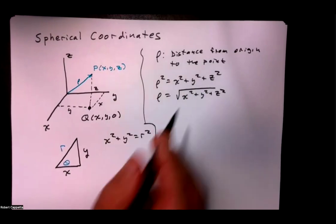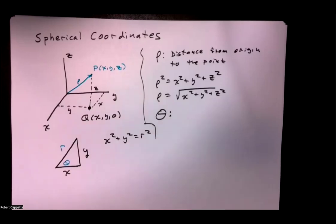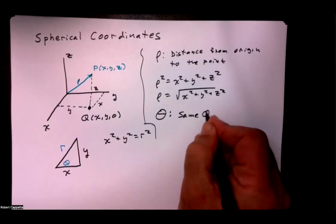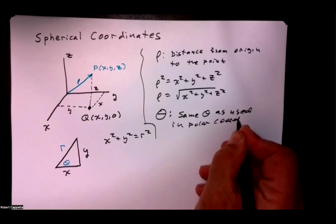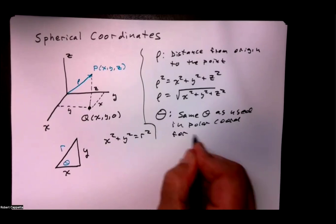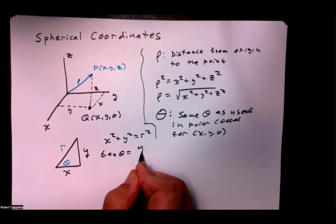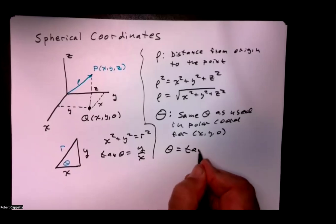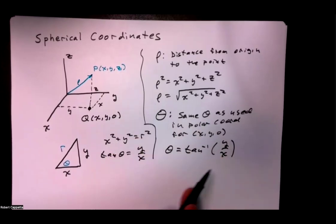We established the fact that rho is the distance from the origin to the point. Theta here is the same theta used in cylindrical or polar coordinates — for the point x, y, 0. The tangent of theta is y over x, which tells us what theta is. Theta is simply the inverse tangent of y over x. So if I know x, y, and z, I can get rho, and if I know x, y, and z, I can get theta.